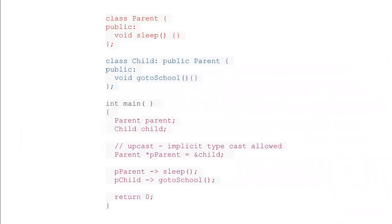We will see an example code in which we have a base class named Parent having a member function named sleep, and then we have the derived class named Child having a member function go_to_school, publicly inherited from the Parent class. In the main function we have objects for both, and then we implicitly assign the reference of the Child class to the pointer of the Parent class. The pointer will allow use of the functions of the base class as well as the derived class.